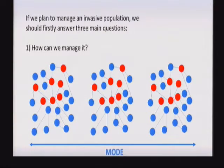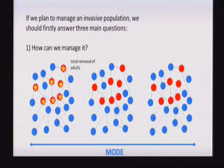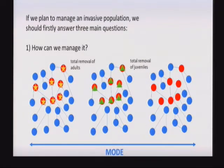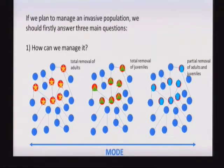Modes are also quite important — how can we manage this invasive population? Do we want to remove adults? Removing adults could be a very good solution since these are breeding animals. But if we remove all adults, we will potentially have thousands or millions of juveniles that are maturing and will become adults again. Or maybe we can remove juveniles, which may be easier, but there are still lots of adults breeding. So we have to decide if it's a good idea to remove juveniles, adults, or a portion of both.